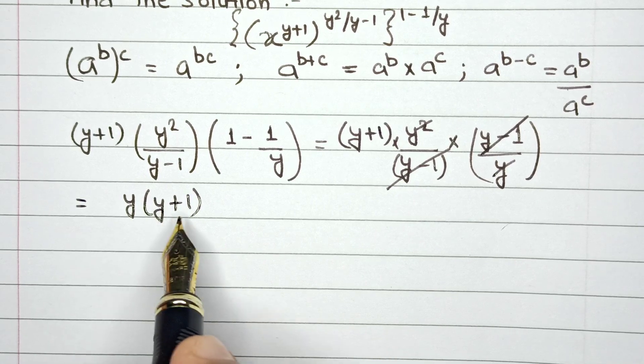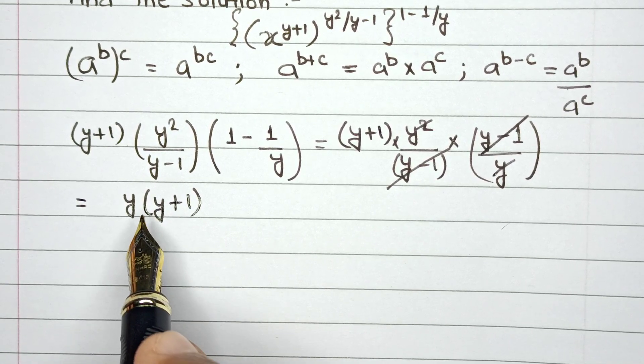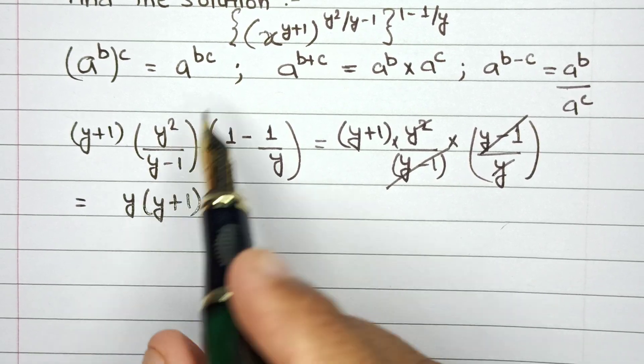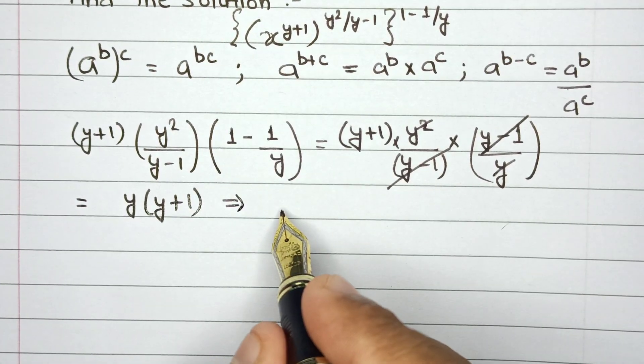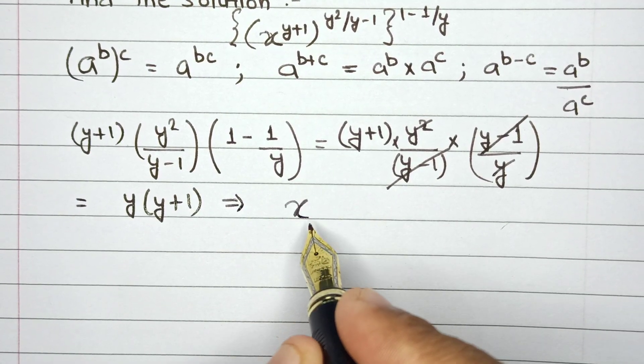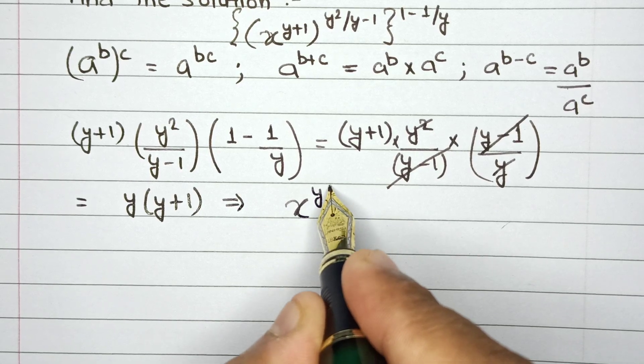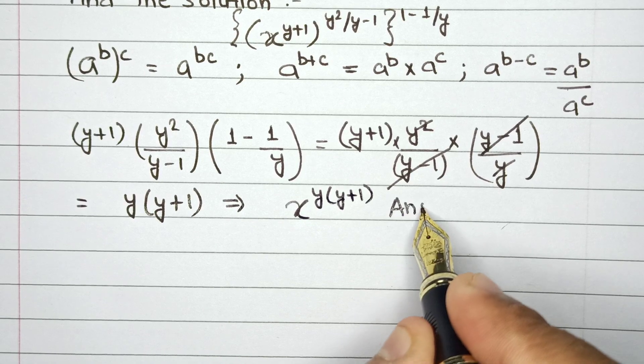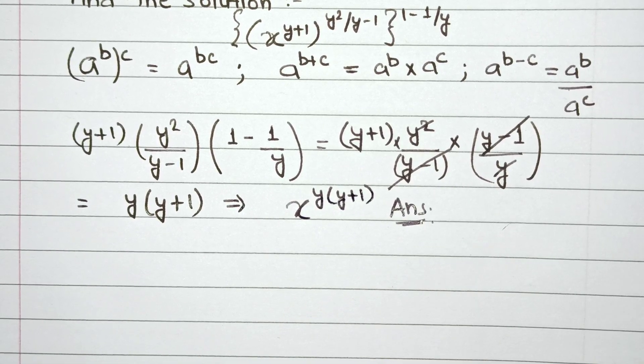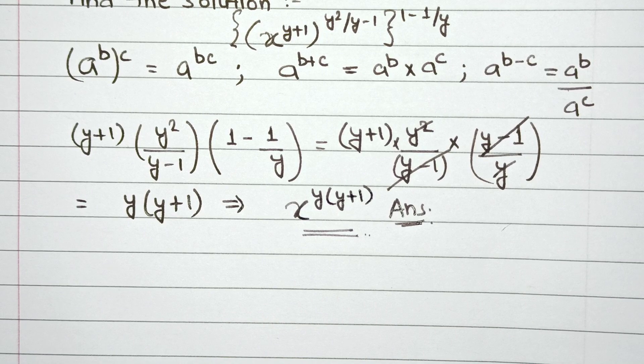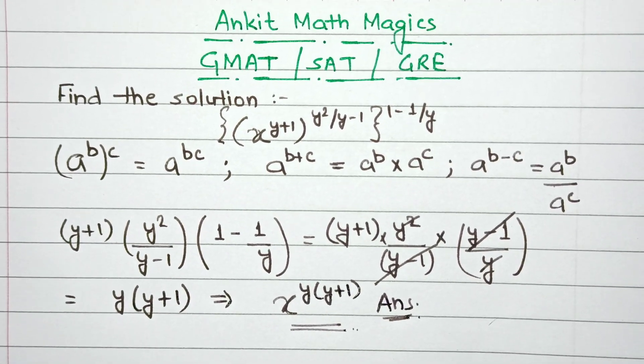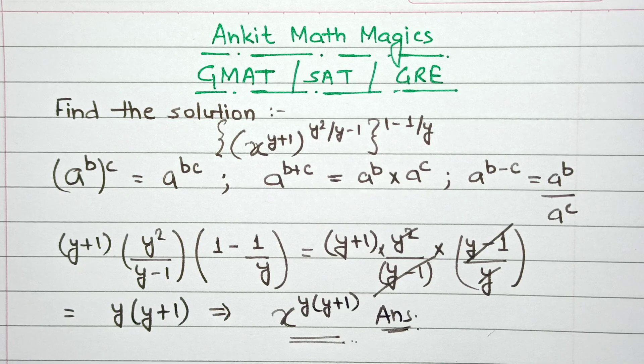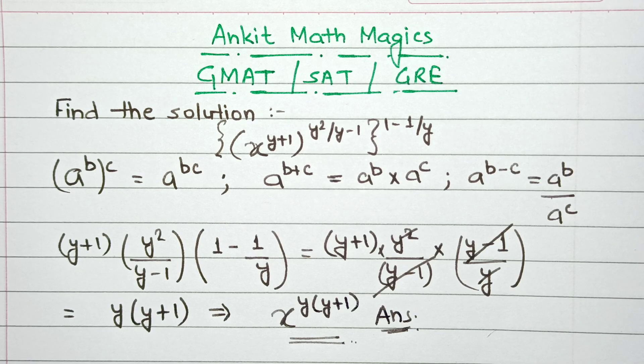Since this is the final answer we can expect, this entire power should have base x. So we have x^(y(y+1)). This is the final answer to this problem. I hope this video was informative, and for more GMAT, SAT, and GRE preparation videos, subscribe to our channel. Thank you for watching.